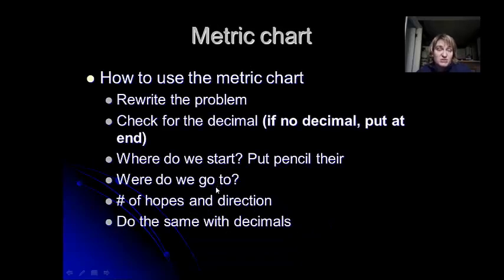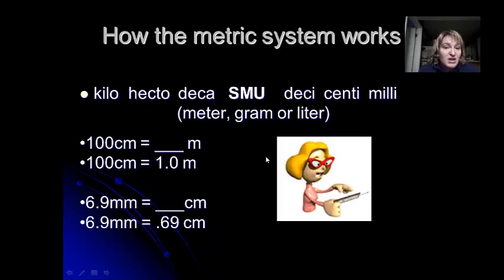Let's take a look at how to use the metric chart. Any time you have a problem that's in a metric system, rewrite it and make sure you write down the decimal. If there's no decimal, put a decimal at the end. You haven't changed the value. Put your pencil where you start, and then you're going to move your pencil the direction of the conversion. Here's how it works. Let's say you need 100 centimeters is how many meters. We lay out our system from largest to smallest. I am going from centimeters, which is right here, to meters. Meters is a standard metric unit. That means I have to go one, two, to the left. I'm getting bigger. There's no decimal here, so I'm going to pretend that there's one right here. I'm going to move it one, two to the left, and drop it off. My 100 centimeters is equal to one meter.